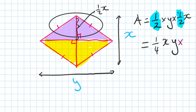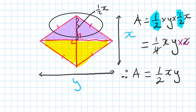We've got two triangles, so I double it. Two times a quarter gives a half, so area of a rhombus is a half xy. Area of a kite and area of a rhombus follow exactly the same rule. Please remember that.